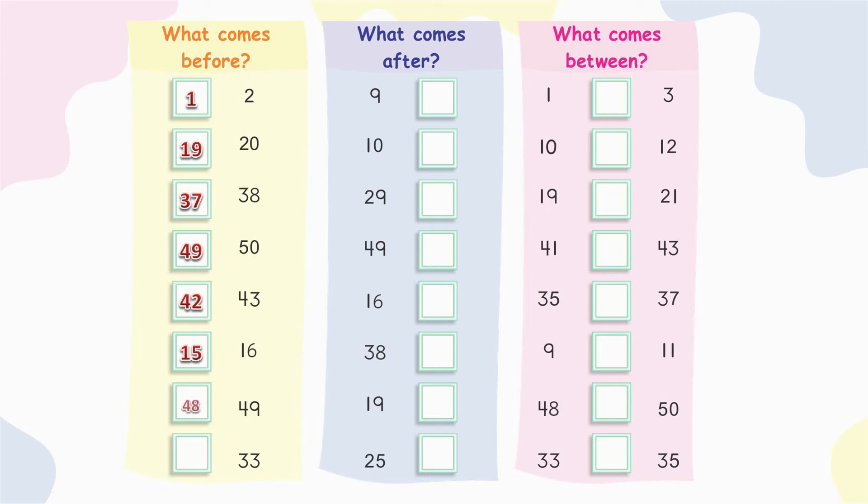Forty-nine. Forty-eight. Thirty-three. What comes before thirty-three? Thirty-two. Very good.